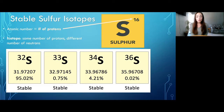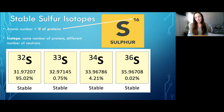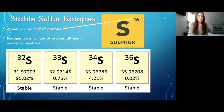To give you some stable sulfur isotope background: isotopes are atoms of the same number of protons but different number of neutrons. Proton number does not change — if it changes, it's a different element. Sulfur 32, 33, 34, and 36 are the four stable sulfur isotopes. They all have 16 protons, but 32 has 16 neutrons, 33 has 17, 34 has 18, and 36 has 20 neutrons.